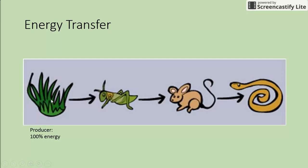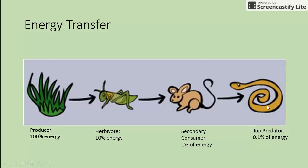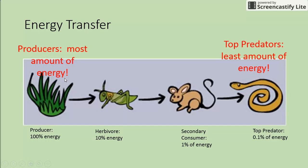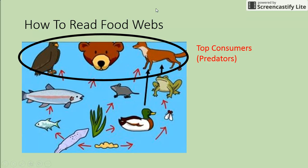For example, if our producer starts with 100 units of energy, the grasshopper eats it and only gets 10. The mouse eats the grasshopper and ends up with only one percent of the original energy, because it only gets ten percent from the grasshopper. The snake then only gets 0.1 percent, since it only gets ten percent from the mouse. So producers have the most energy and top predators have the least.